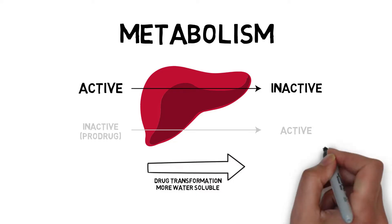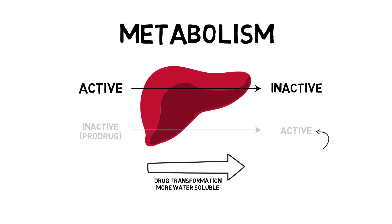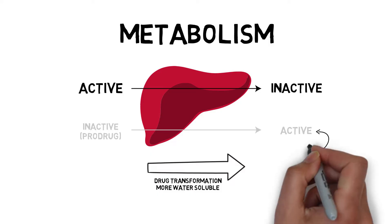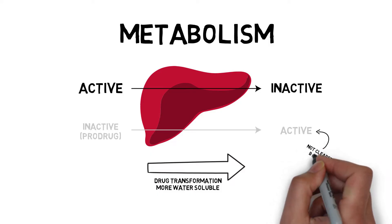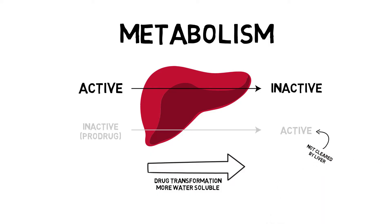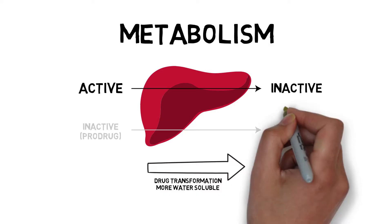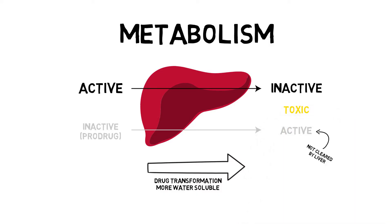In the context of clearance, this means that prodrugs are not cleared by the liver, as they become active after metabolism. Also beware of toxic metabolites, which are usually inactive but damaging to the tissues.